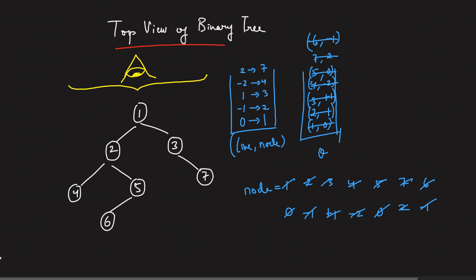Once the traversal is complete, the map stores the top view. Iterating the map in sorted key order: key minus 2 gives 4, key minus 1 gives 2, key 0 gives 1, key 1 gives 3, key 2 gives 7. So the top view from left to right is: 4, 2, 1, 3, 7.